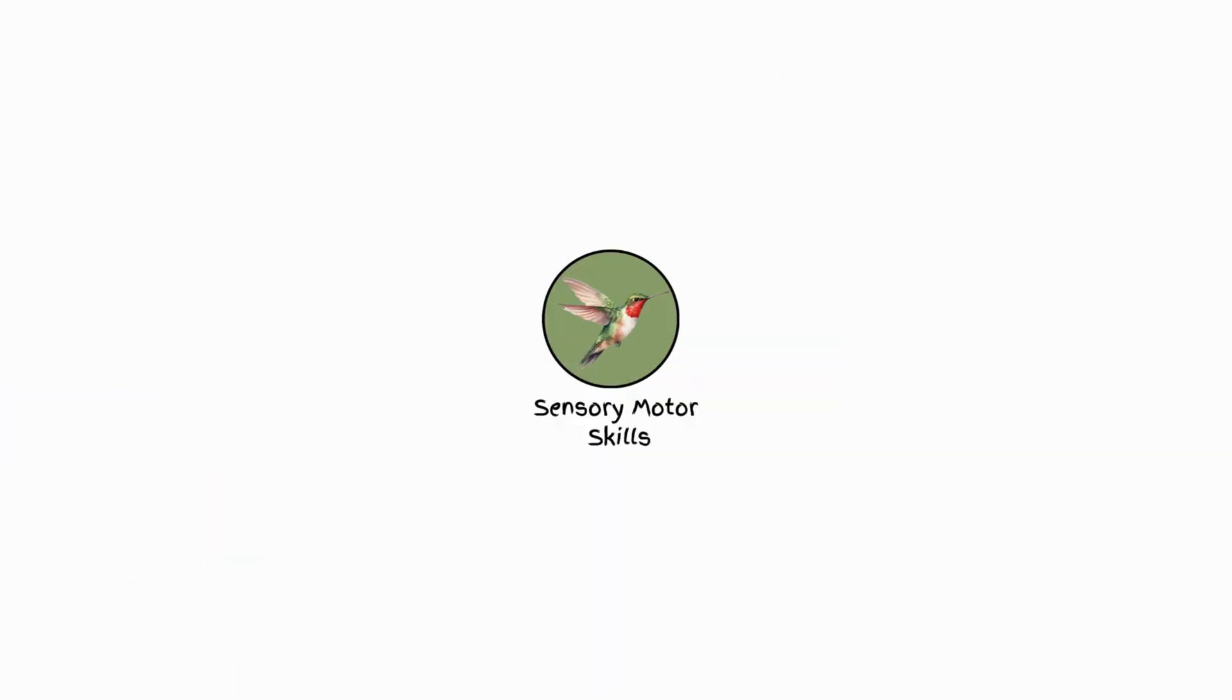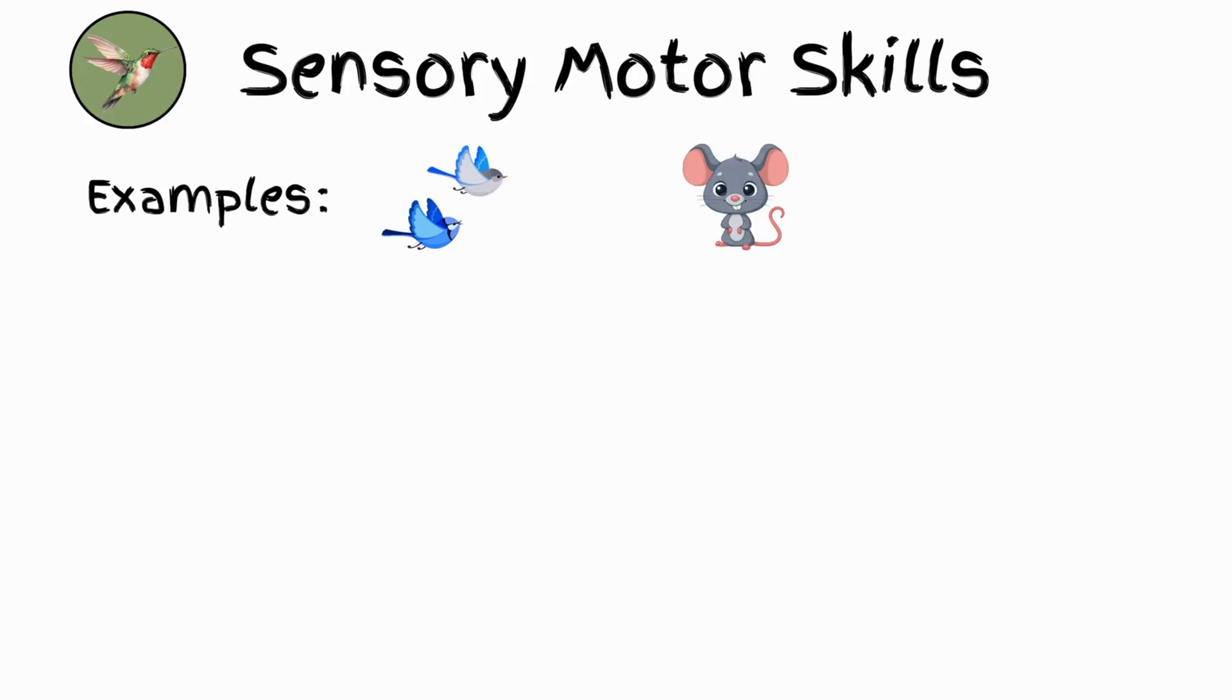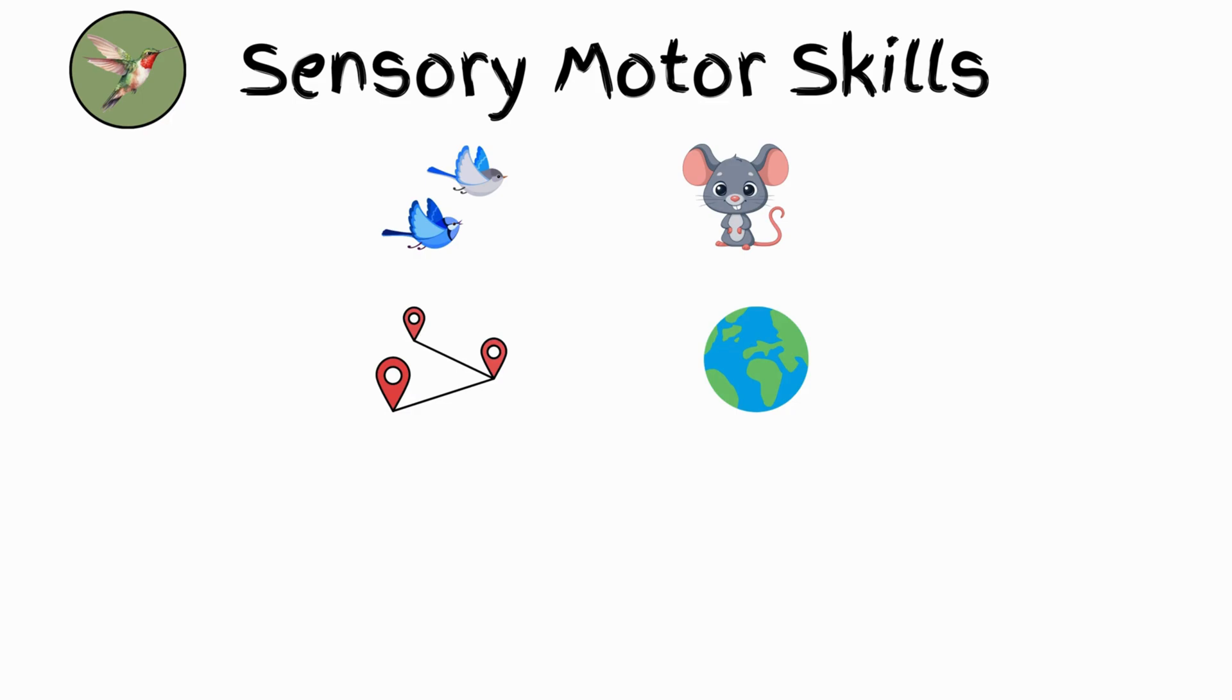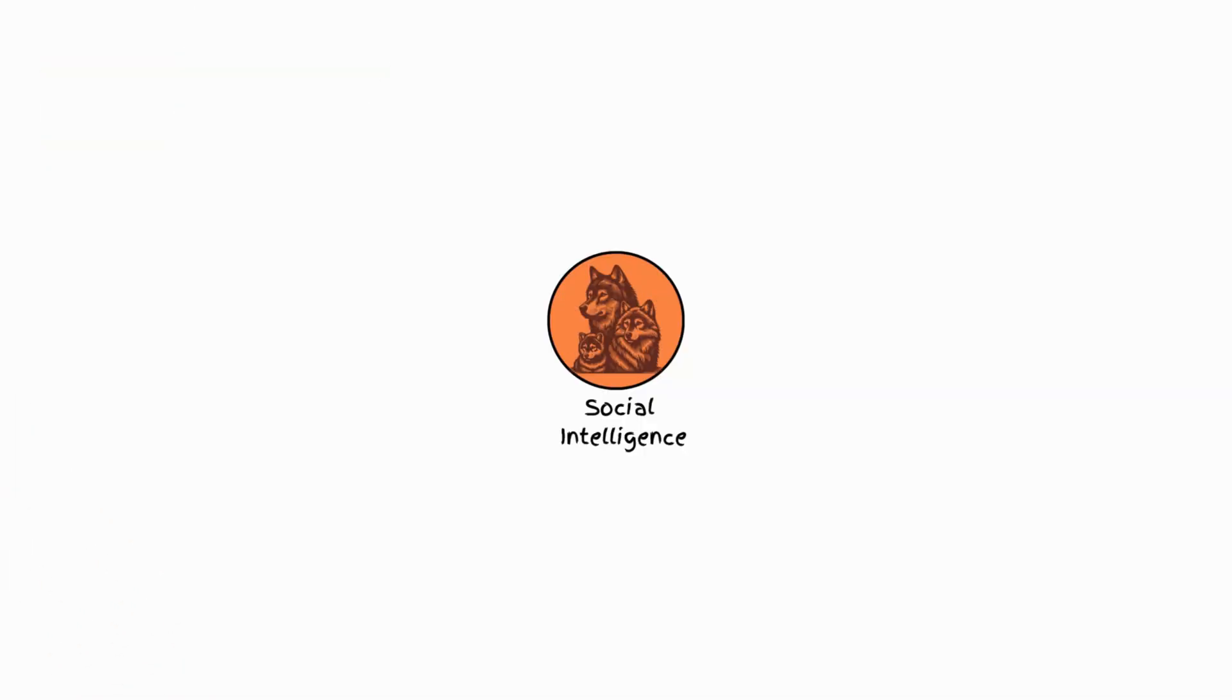Sensory motor skills. Examples: birds, small mammals like mice. They use their senses to explore, move around, and solve simple problems by trial and error. In short, they know how to navigate their world and get things done.